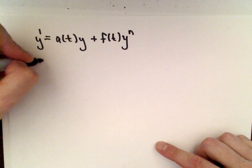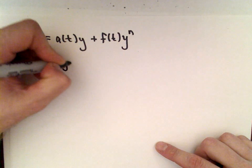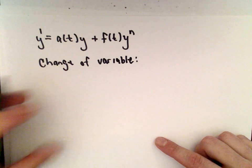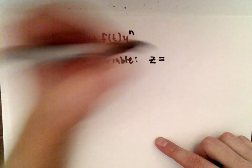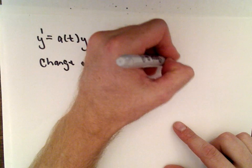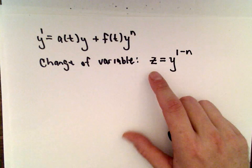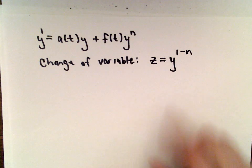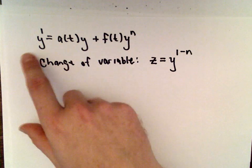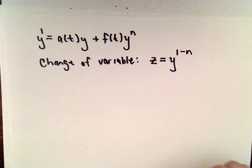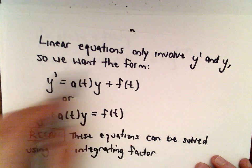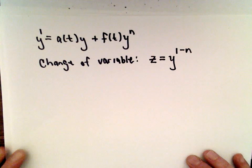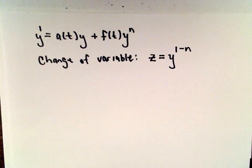We can be clever and do a change of variable. We're going to let z equal y raised to the power of 1 minus n. It turns out, when we do this change of variable, we're actually going to get a linear equation. It's not going to be in terms of y anymore, it's going to be in terms of z, but just replace the y's with z's, and you'll see that we end up with a linear equation.